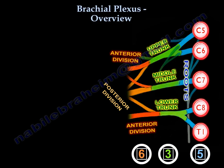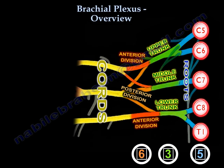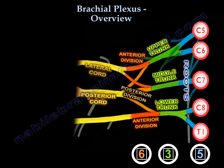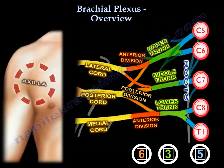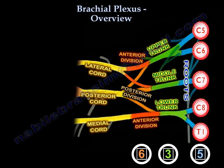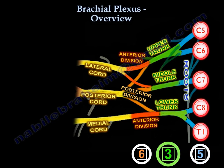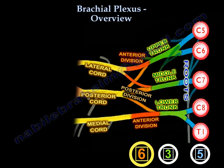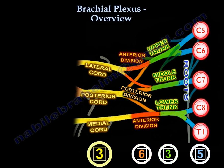Some of these divisions join together to give you cords — the posterior cord, the lateral cord, and the medial cord. These cords are located in the axilla. The running count is: five roots, three trunks, six divisions, and three cords.